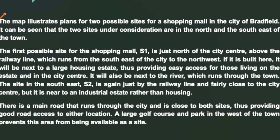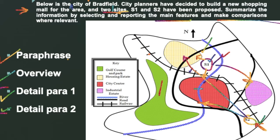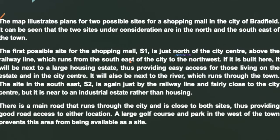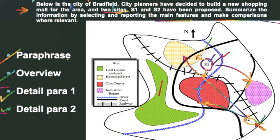The probable model answer: 'The map illustrates plans for two possible sites for a shopping mall in the city of Bratwell. It can be seen that the two sites under consideration are in the north and the southeast of the town. The first possible site S1 is just north of the city center, above the railway line which runs from the southeast to the northwest. If built there it will be next to a large housing estate, providing easy access to residents and those in the city center, and also next to the river running through the town. The site in the southeast, S2, is again by the railway line and fairly close to the city center, but it is near an industrial estate rather than housing.'